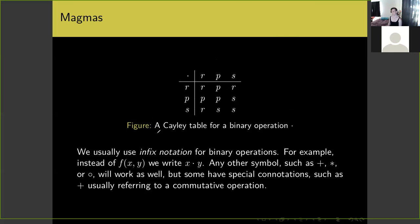We usually use infix notation for binary operations, so instead of writing f(x,y) we write x·y. Any symbol like plus, asterisk, or a circle will work as well, but some have special connotations — for example, the plus sign usually refers to a commutative operation and using it for a non-commutative one could cause confusion. It's called infix because the symbol is inside the two symbols it's combining.